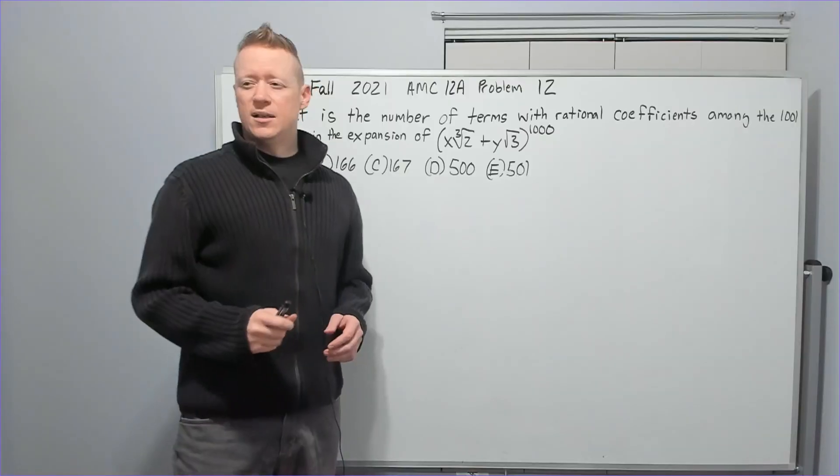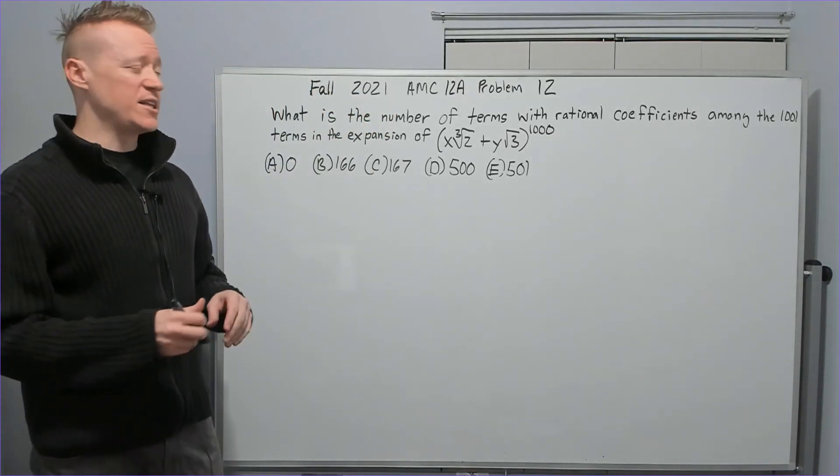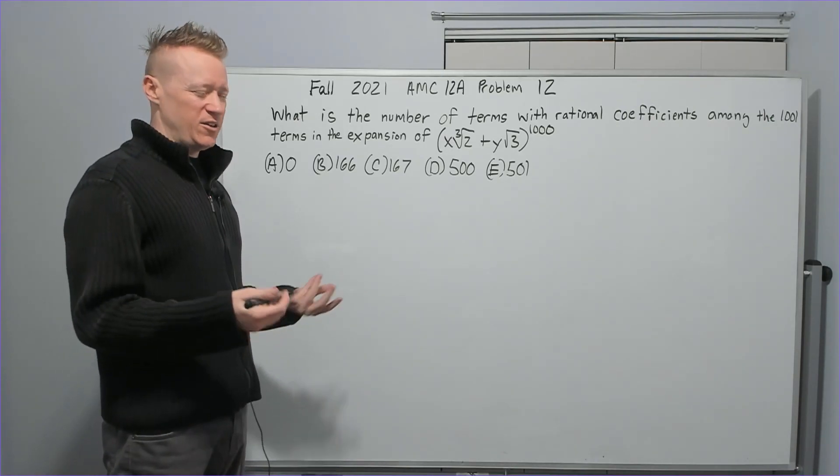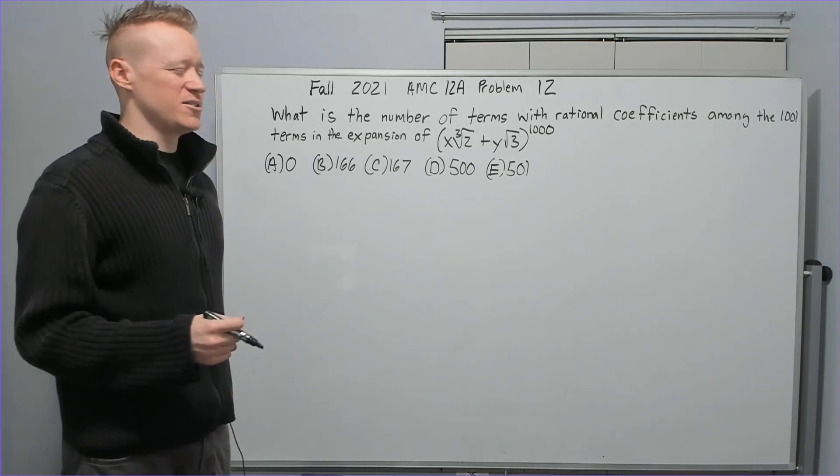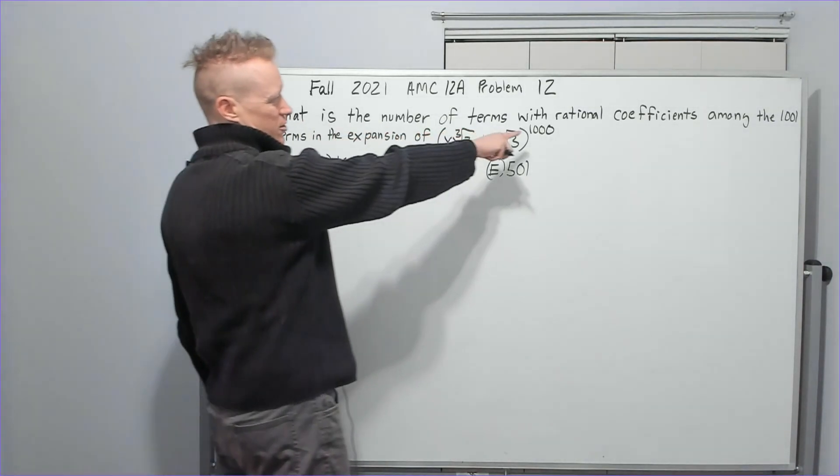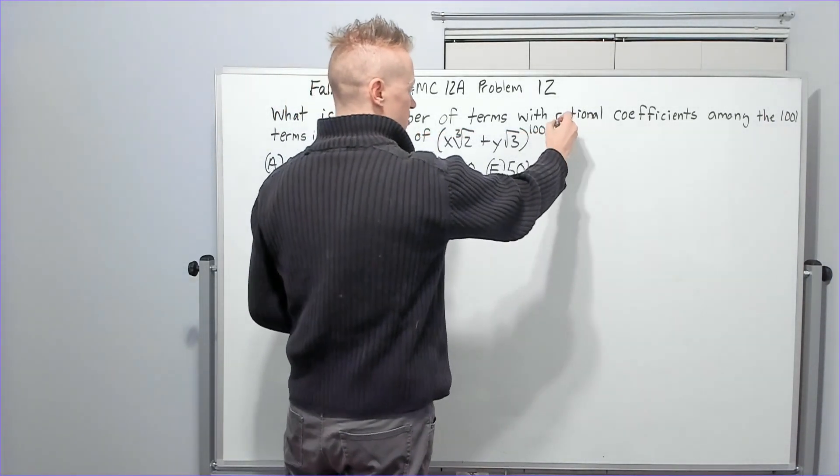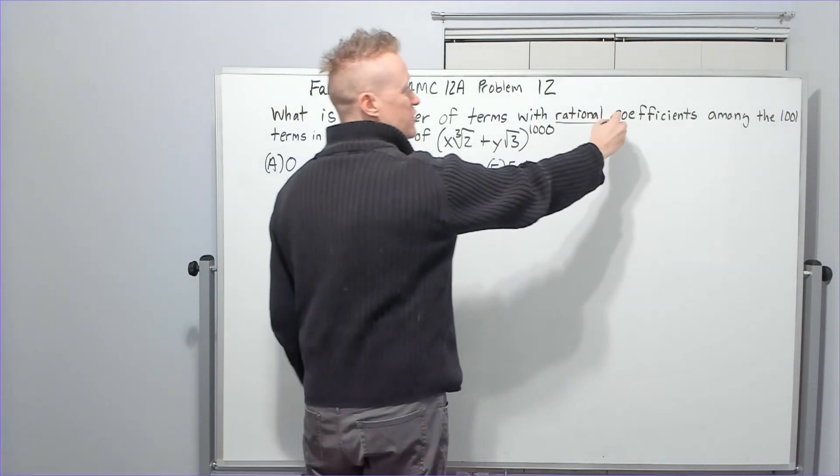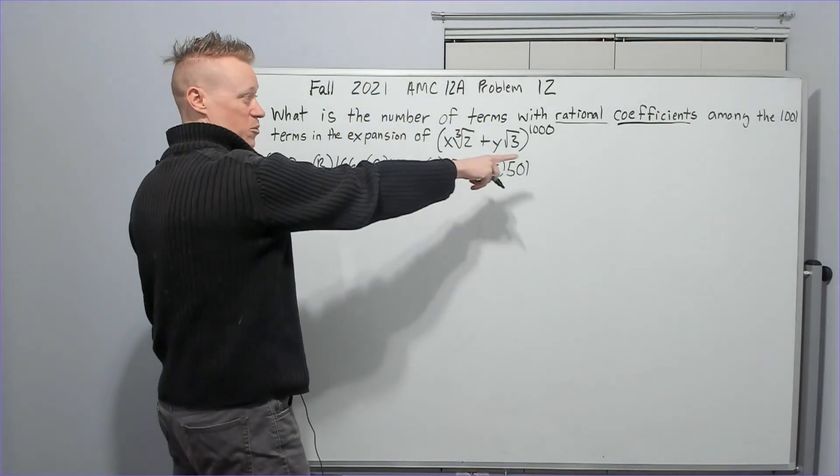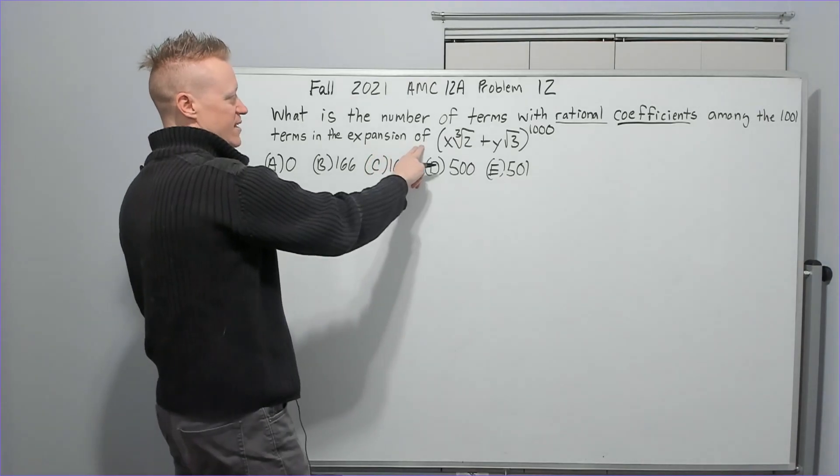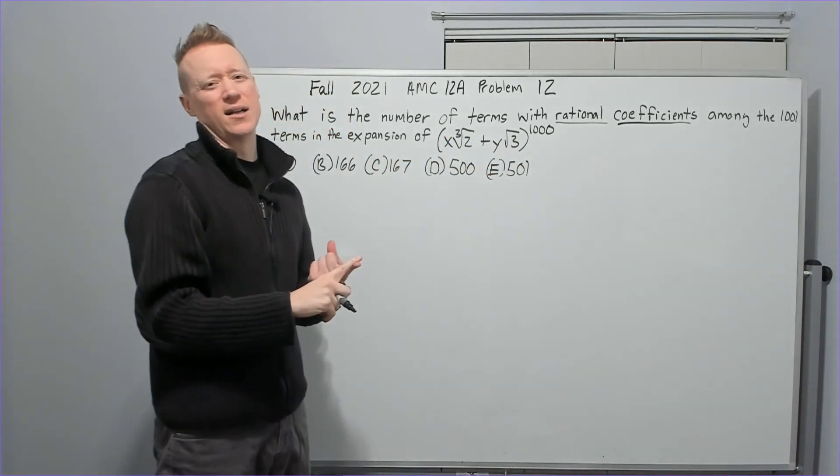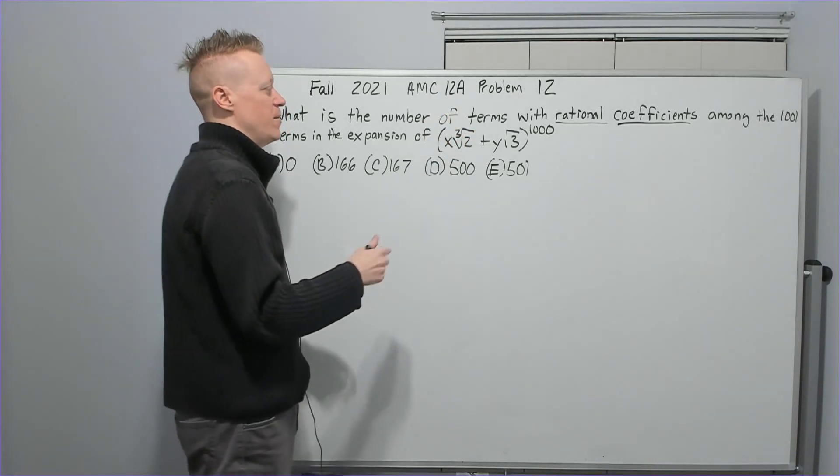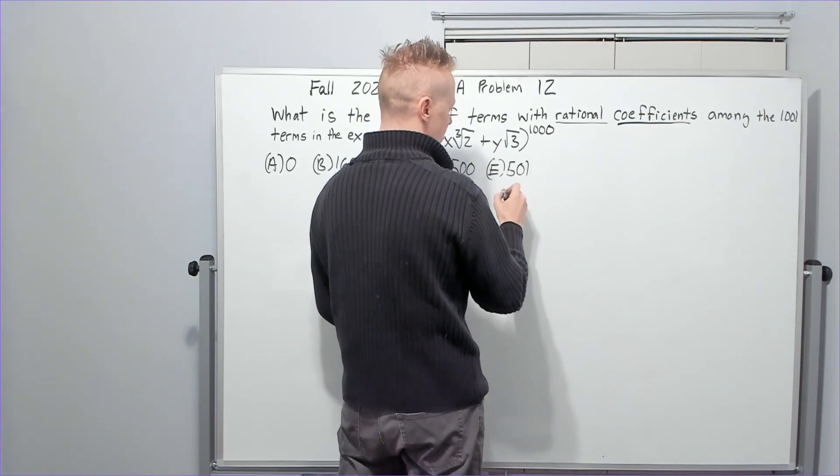Let's go to problem 12. And now we'll do problem 12 from the fall 2021 AMC 12A. There's a few fundamental concepts in this problem, and if you knew your way around those concepts, it shouldn't have been too bad. What is the number of terms with rational coefficients? Rational means can be written as a ratio, like a fraction if you have to, but integers are fractions.